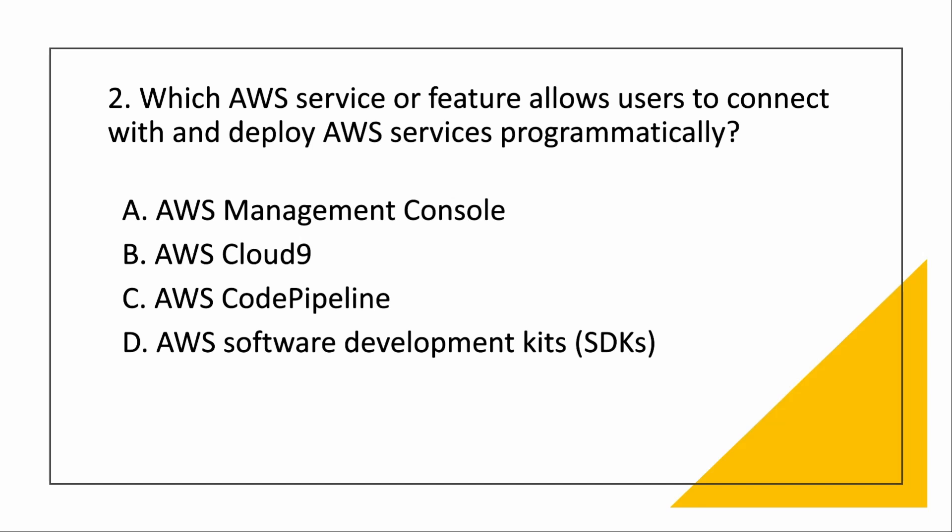Cloud9 is basically our AWS cloud IDE which lets you code, run your code, and debug your code with just a browser. Then there's SDK — Software Development Kits. SDKs help you simplify your code by providing JavaScript objects for AWS services. Every language has its own AWS SDK — for Java you have an AWS SDK, for Python you have an AWS SDK.